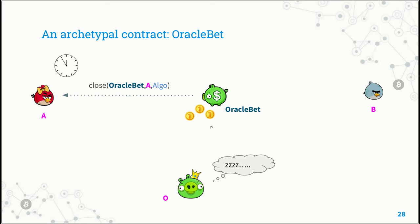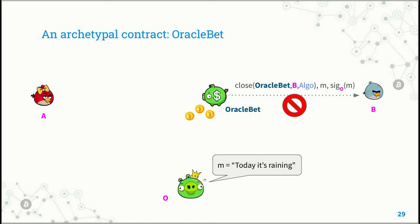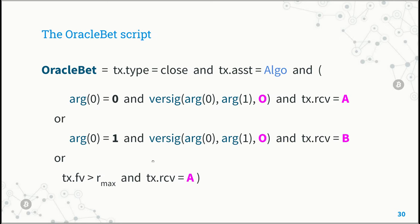The contract has an additional feature to avoid the case where the oracle does nothing and the coins remain frozen within the contract. There is a sort of timeout: after a certain round, Alice can append a transaction to close the contract and redeem all the coins. What happens if the oracle says it's raining but Bob still tries to append a transaction to redeem all the coins? In this case, the transaction cannot be appended to the blockchain.